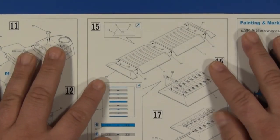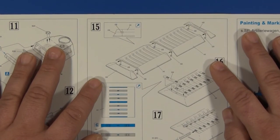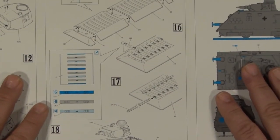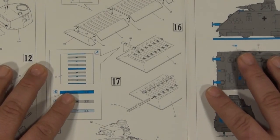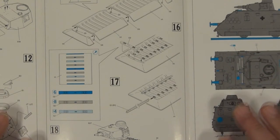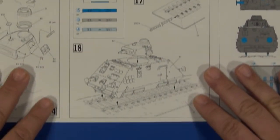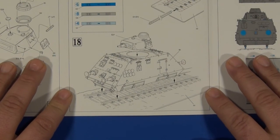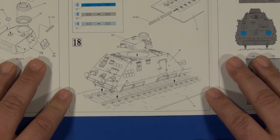Step fifteen: base sections. Steps sixteen and seventeen: installing the ties and tracks. Finally, step eighteen: fitting the turret and setting the completed model on the tracks.